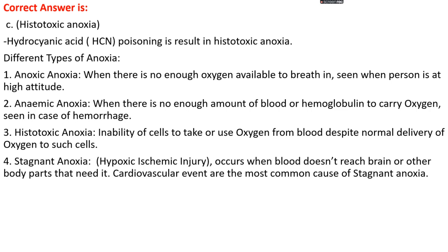There are four types of anoxia. Anoxic anoxia occurs when there is not enough oxygen available to breathe in the environment — mainly seen when a person is at high altitude. Anemic anoxia occurs when there is not enough blood or hemoglobin to carry oxygen, as seen in cases of hemorrhage. Histotoxic anoxia occurs when there is an inability of cells to take or use oxygen from blood despite normal oxygen delivery to those cells. Stagnant anoxia, also known as hypoxic-ischemic injury, occurs when blood does not reach the brain or other body parts, mainly due to cardiovascular diseases.